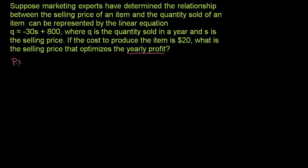The profit is going to be equal to the quantity that you sell times the profit per unit. And the profit per unit is the selling price per unit minus the cost of producing that unit. The cost of producing the unit is $20, so it's minus $20.